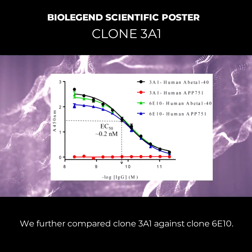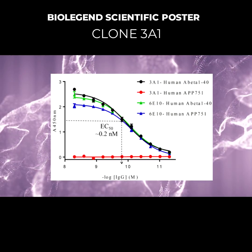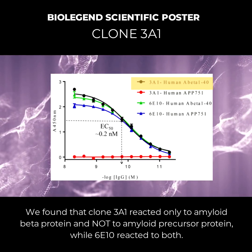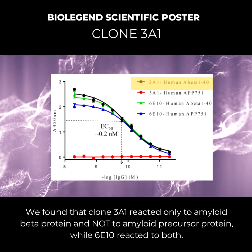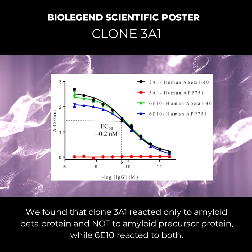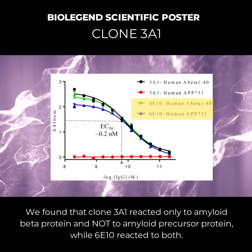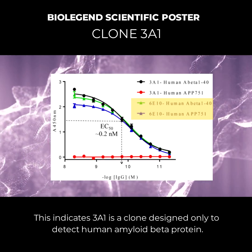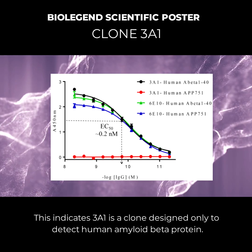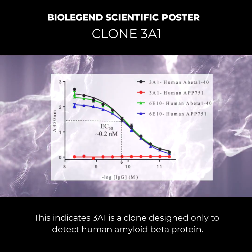We further compared clone 3A1 against clone 6E10. We found that clone 3A1 reacted only to amyloid beta protein and not to amyloid precursor protein, while 6E10 reacted to both. This indicates 3A1 is a clone designed only to detect human amyloid beta protein.